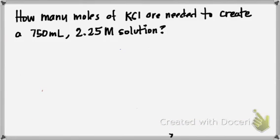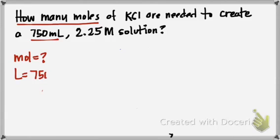In this next example, it says how many moles of potassium chloride are needed to create a 750 milliliter, 2.25 M solution? It's a little bit different than what you've seen before. How many moles? So now we're just not looking for molarity, we're looking for moles. You're given a volume at 750 milliliters, and you're also given a target molarity, which is 2.25 molar KCl.